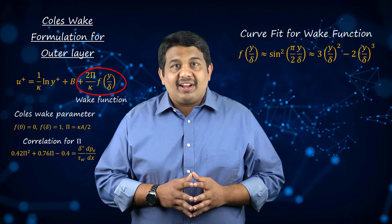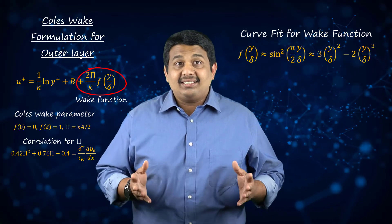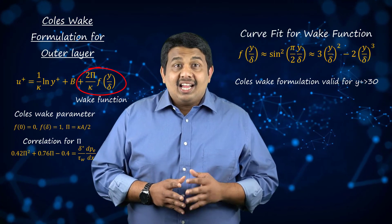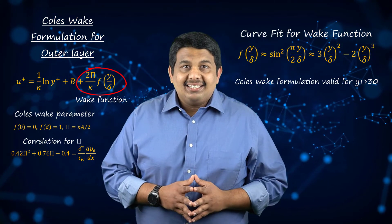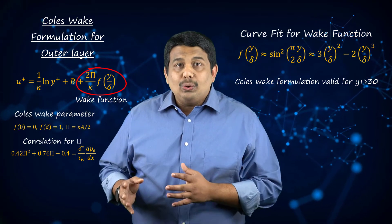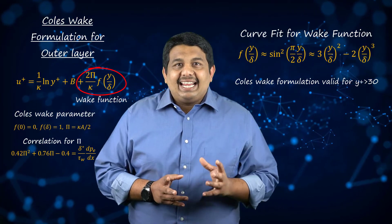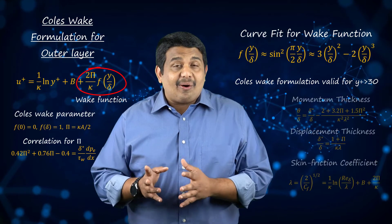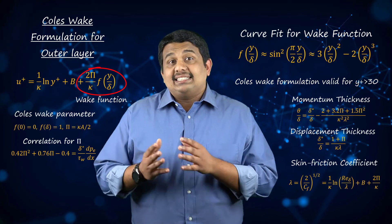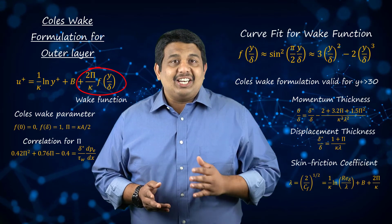This modified log law profile is valid all through the overlap and the outer layer region. In the near-wall region, the wake function can be neglected and the Spalding formula can be used to calculate the velocity distribution. By integrating Coles's wall-wake formulation, we can obtain the boundary layer parameters such as the displacement thickness, momentum thickness, and skin friction coefficient.